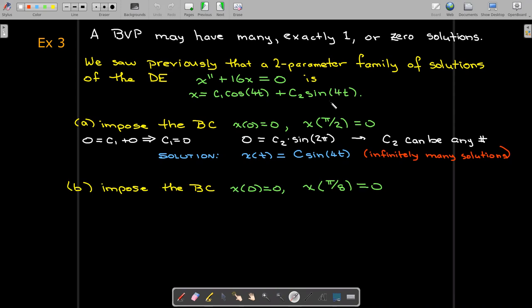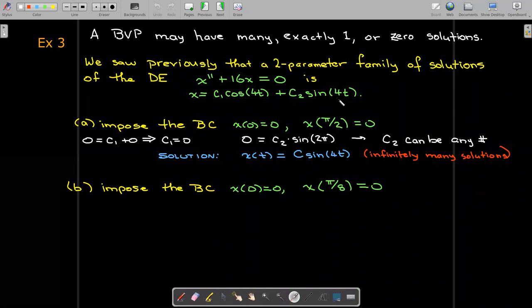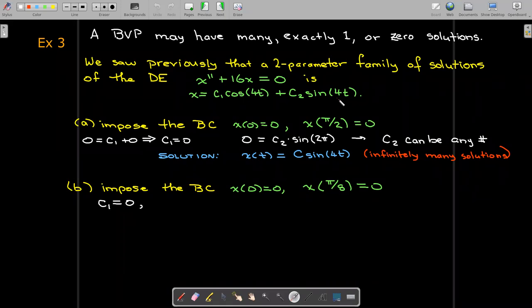Remember cos(π/2) is 0, and sin(π/2) is 1. So we'll still get the same value for c_1.